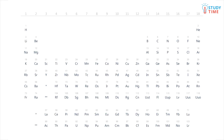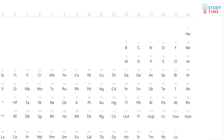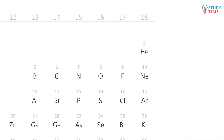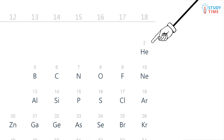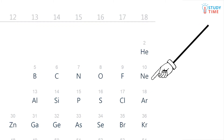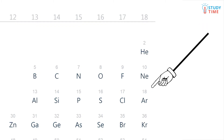If you look at the noble gases, group 18 on the periodic table, you can see that these elements all have full valence shells. Since they are already stable, these atoms don't react much with other atoms, as they don't want any more electrons.